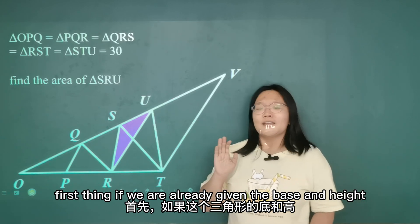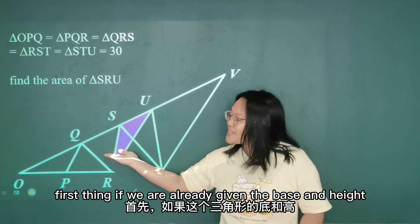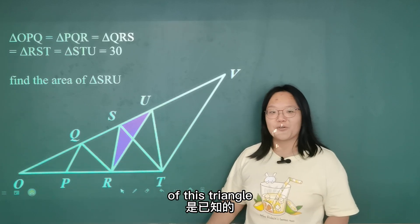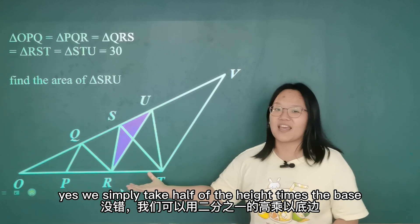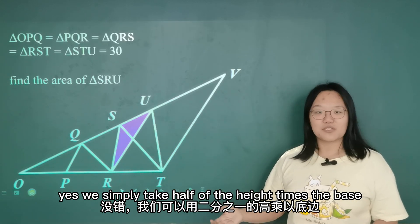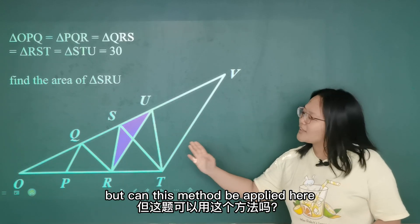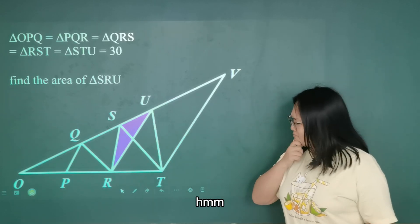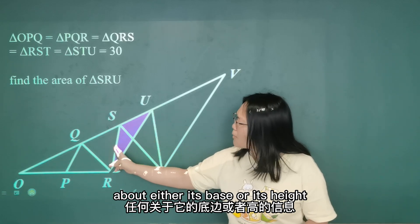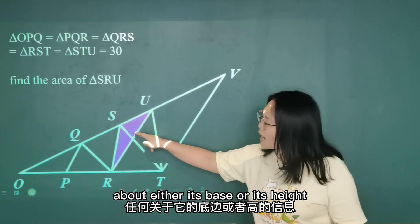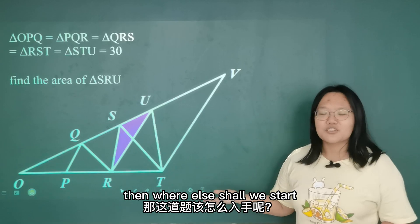First thing, if we are already given the base and height of this triangle, can you calculate its area? Yes, we simply take half of the height times the base. But can this method be applied here? Hmm, probably not. Because we have no clue about either its base or its height. Then where else shall we start?